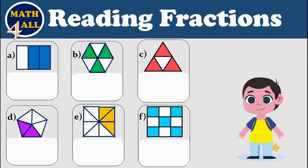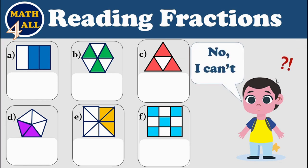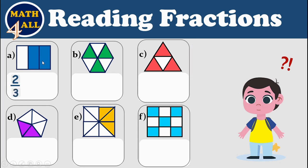Can you read the fraction of this shape? At first, how many parts do you have? How many colored or shaded parts? Here we have just two. Now the one whole is divided into three parts, so you can read it as two thirds.